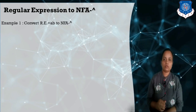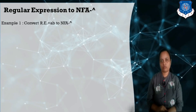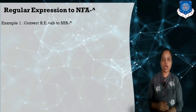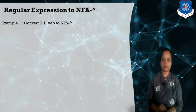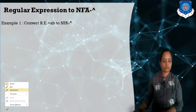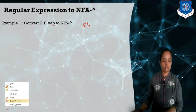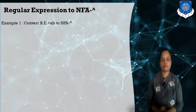Here I am taking the basic structure of Thompson Construction Method for constructing the NFA-null from the given regular expression. There are three basic operations of regular expression. First is concatenation. Here I am taking the example of concatenation and how we are going to construct the NFA-null. These two letters are connected with the concatenation operation — it means a dot b. I want to convert this regular expression to NFA-null, so what is the basic structure for Thompson Construction Method?